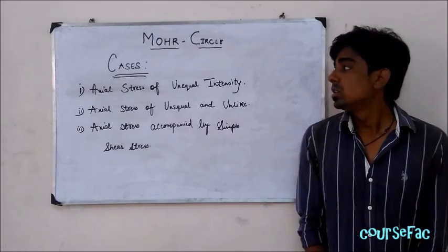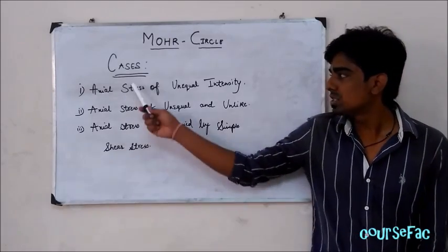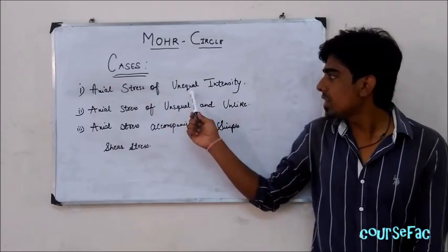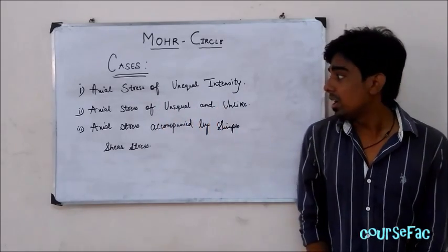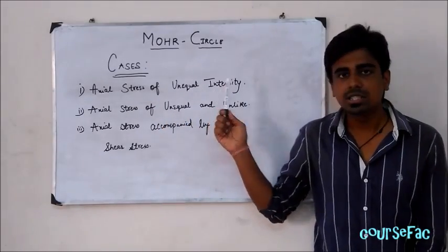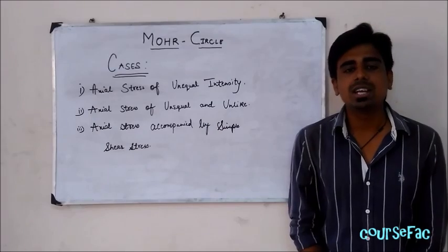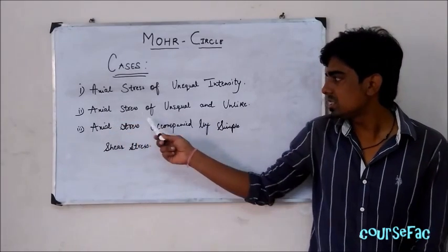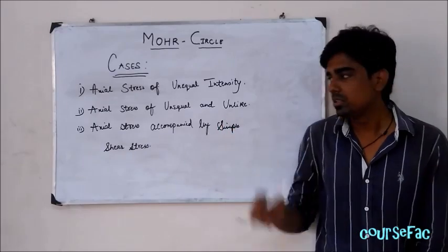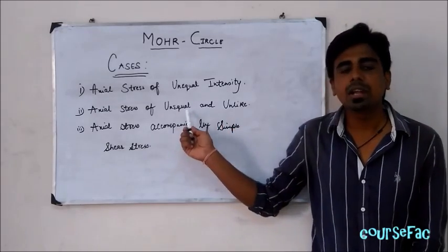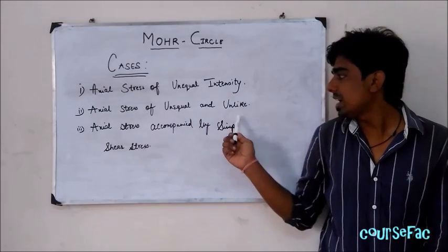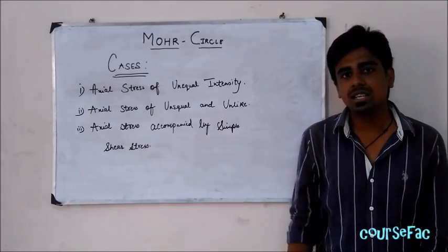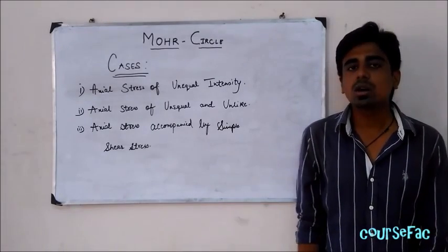The various cases in which we can use Mohr Circle are described here. The first one is Axial Stress of Unequal Intensities, meaning the magnitude of the stresses might be unequal. The second one is Axial Stress of Unequal and Unlike, where unequal means the magnitude might differ and unlike means the nature — tensile or compressive — might be different.